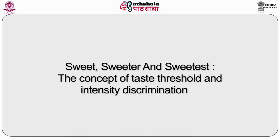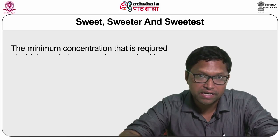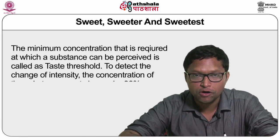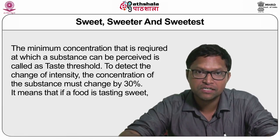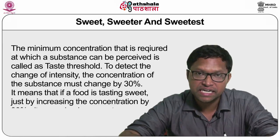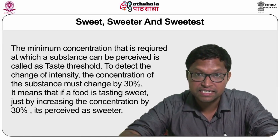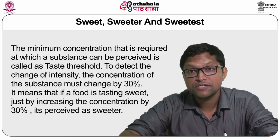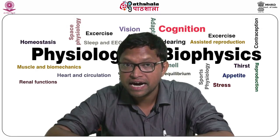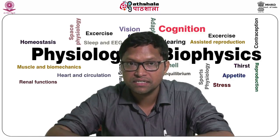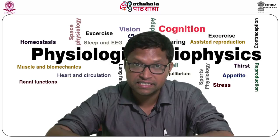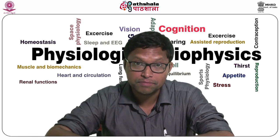The minimum concentration required for a substance to be perceived is called the taste threshold. To detect a change of intensity, the concentration of the substance must change by 30 percent — meaning if a food tastes sweet, increasing the concentration by 30 percent makes it perceived as sweeter. Glucose has the highest threshold concentration to which taste buds respond, and bitter substances like strychnine have the lowest threshold.